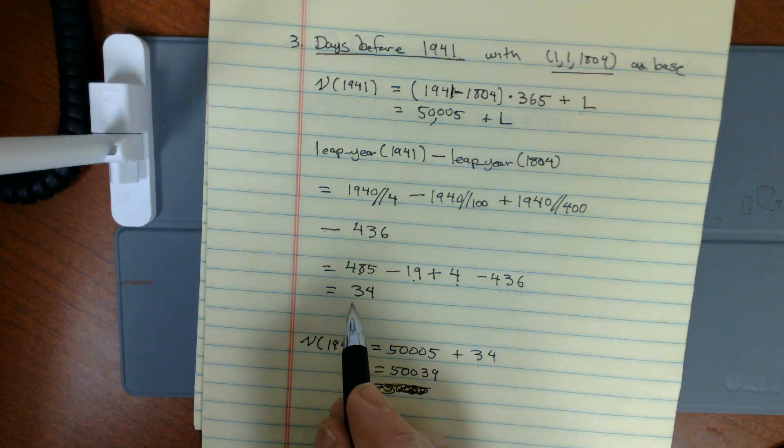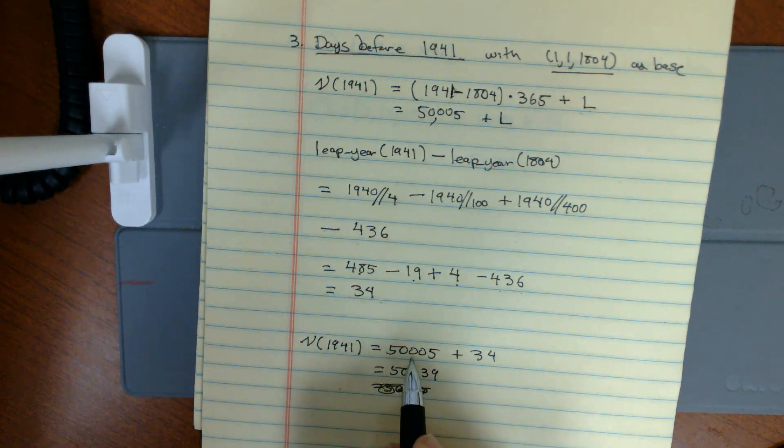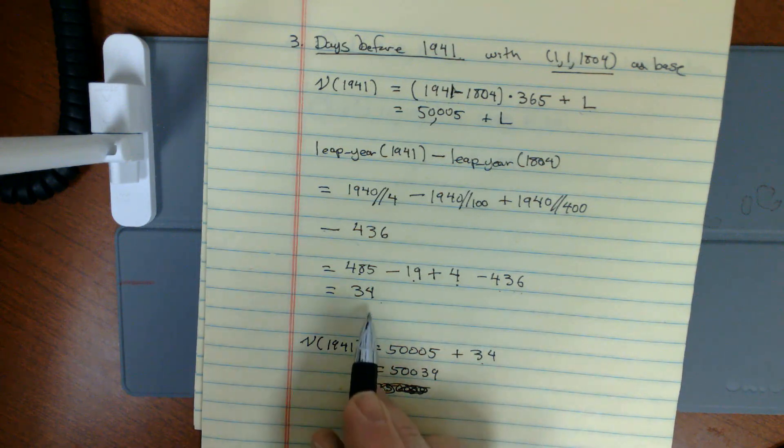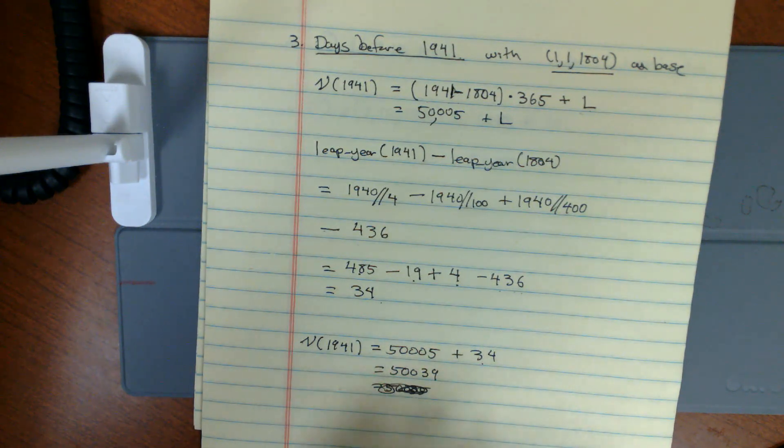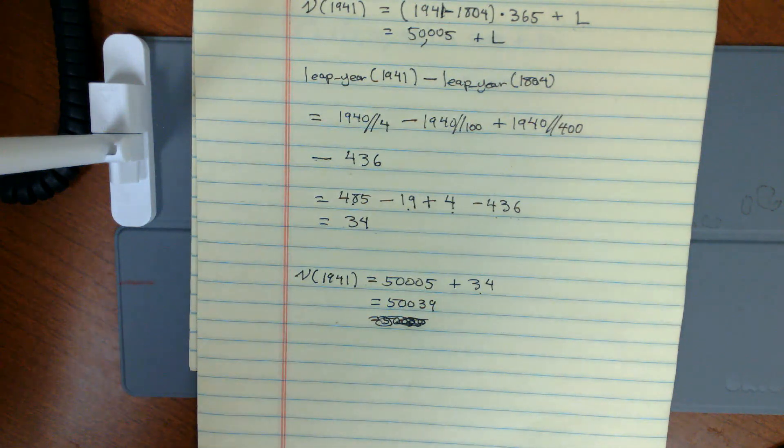Do all of my math and I'll get 34 there. Then I add my 50,005 to my 34 there and get 50,039. So 50,039 days occurred in my calendar before 1941.